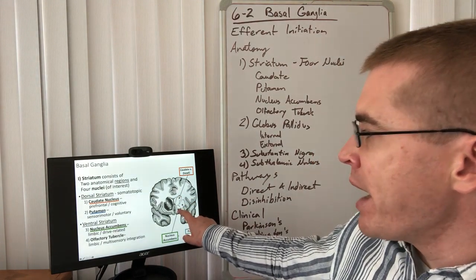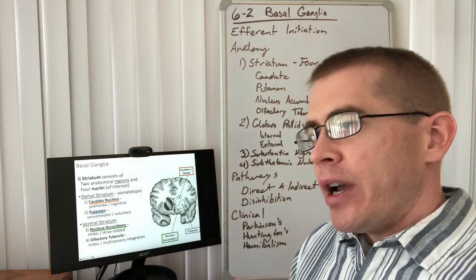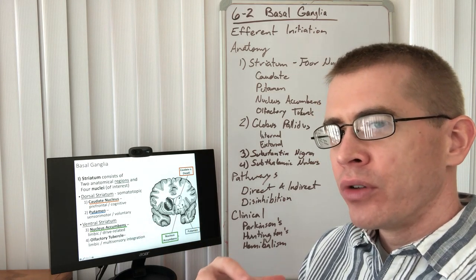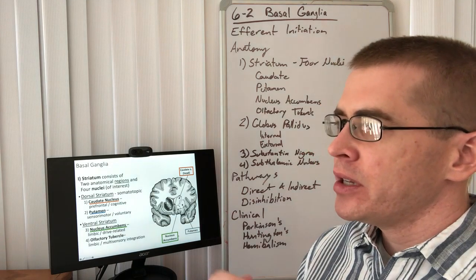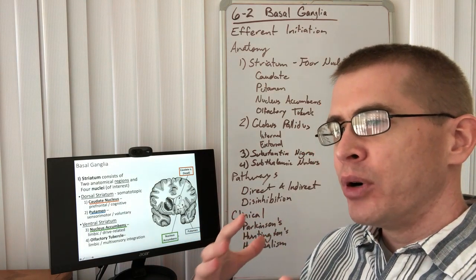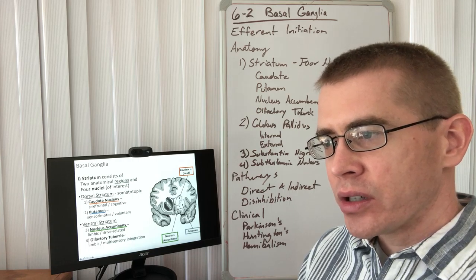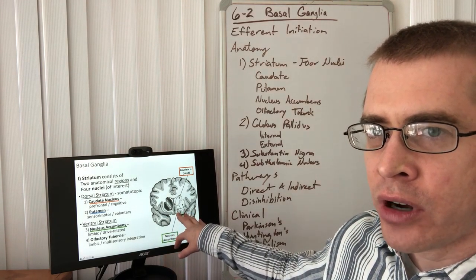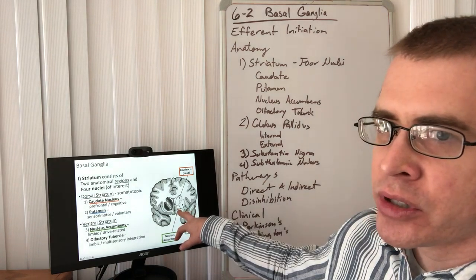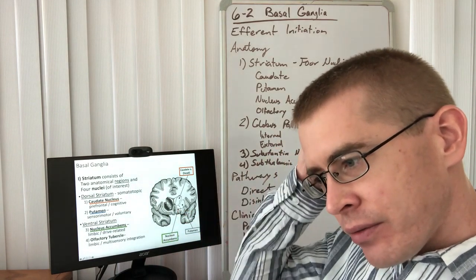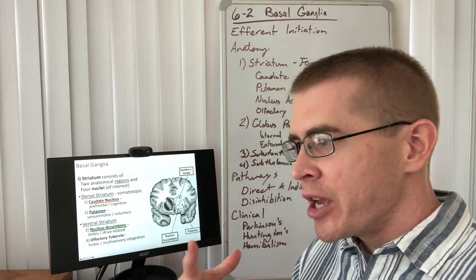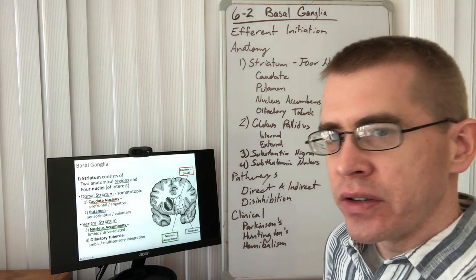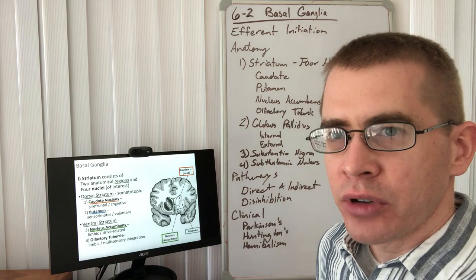Moving down to the ventral striatum, it contains the nucleus accumbens. Nucleus accumbens is all about drive, motivation, and reward. So it's considered a limbic function and will output into limbic areas. The olfactory tubercle is also considered part of the striatum, involved in integrating olfactory information, memory, and emotion — these limbic functions — in order to inform the ultimate processes involved.